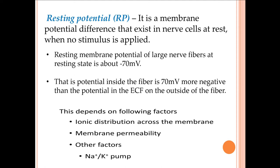Membrane permeability means the membrane allows certain ions to move easily while hindering others. For example, the potassium ion is 100 percent permeable to the cell membrane, so potassium can move inside and outside easily. The three main factors contributing to resting membrane potential are: first, ionic distribution; second, membrane permeability; and third, the sodium-potassium pump.